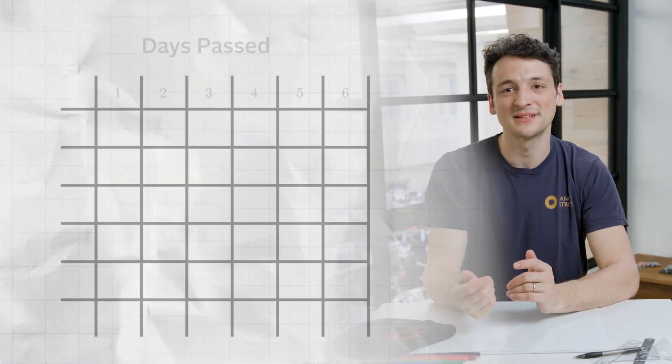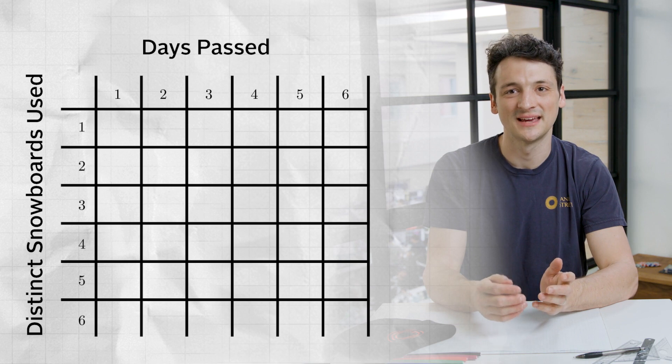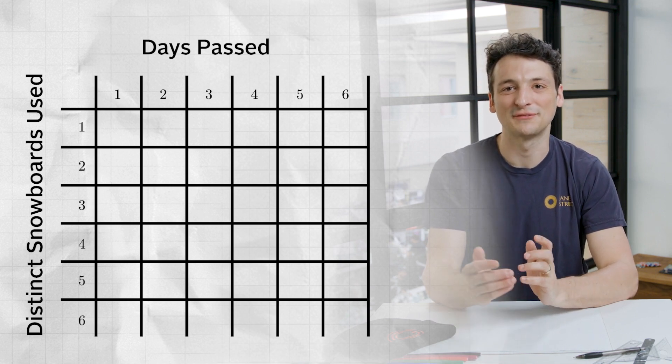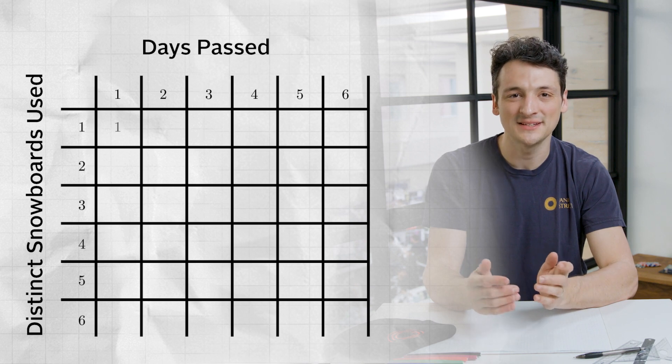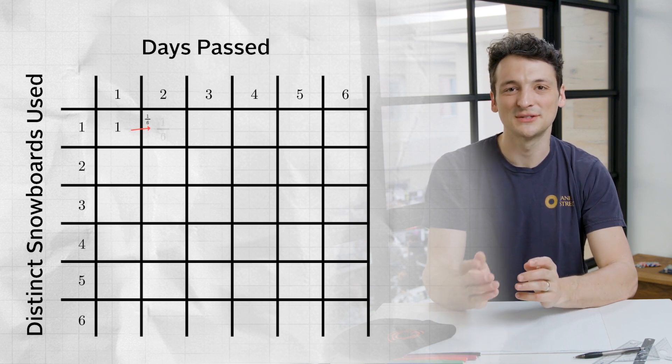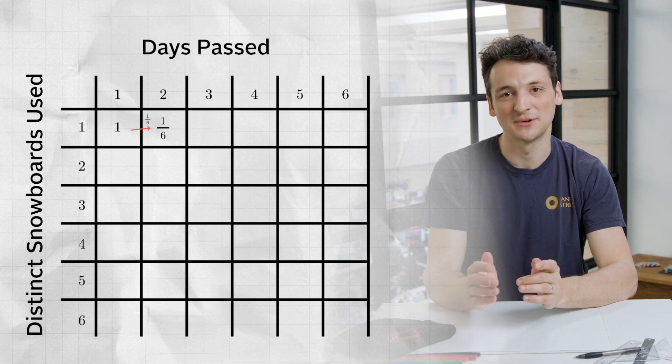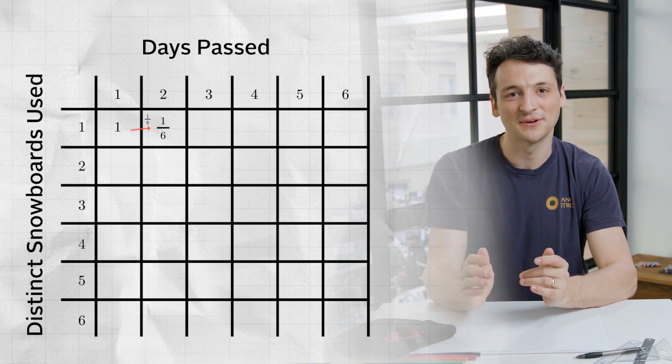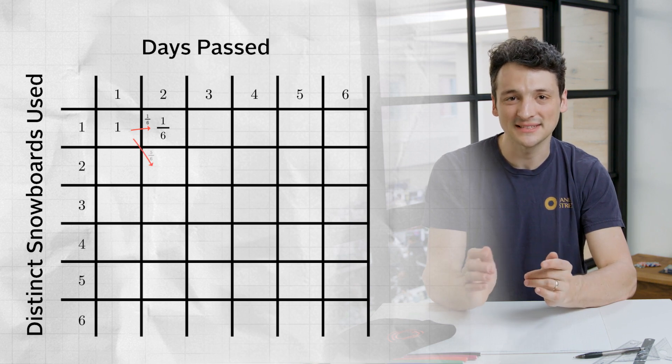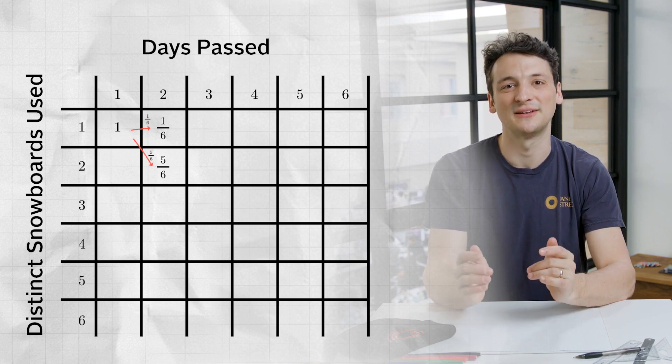Starting with a naive computational approach, we could draw up a table of days past and distinct snowboards used and fill it in a day at a time. For example, after one day, we know exactly one distinct snowboard has been used. But after the second day, there is a one-sixth probability the same snowboard was used, and so the total number of snowboards hasn't changed, and we remain in the top row, and a five-sixth chance we use a new snowboard and go to the second row.